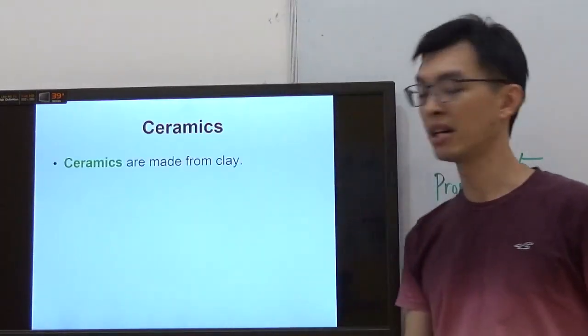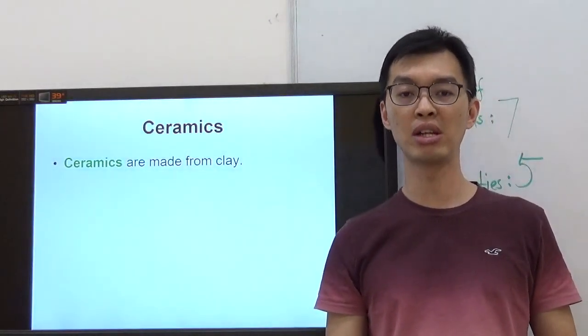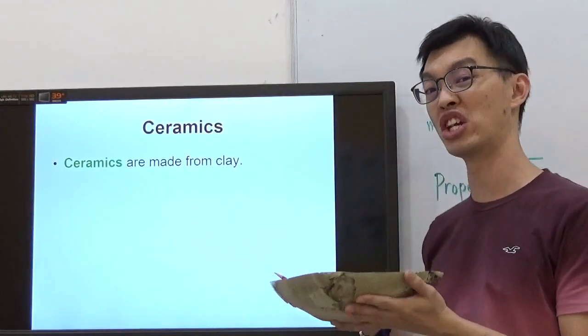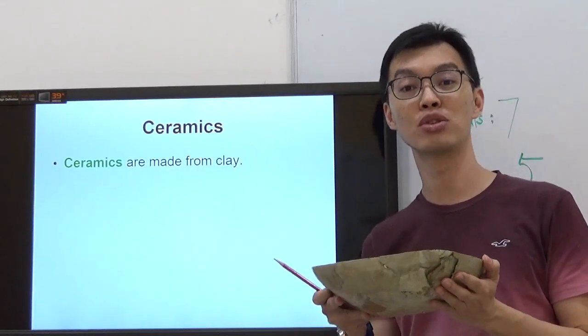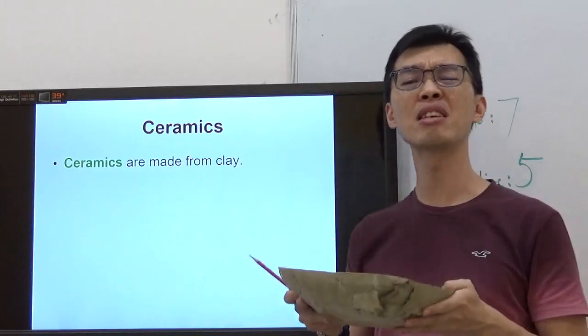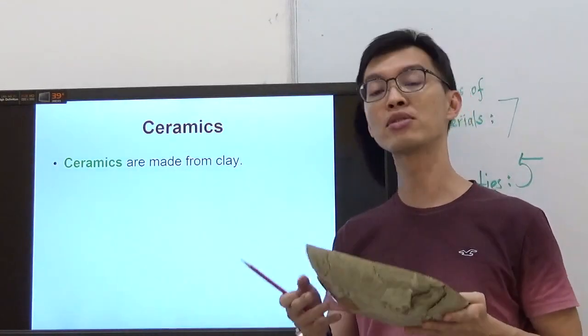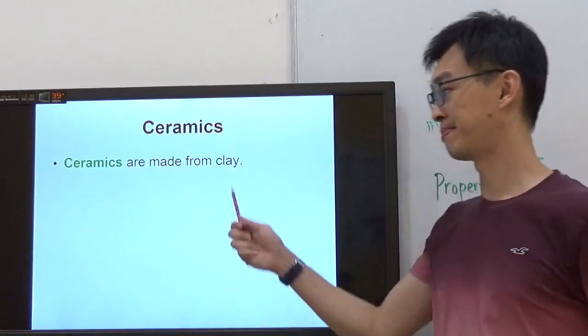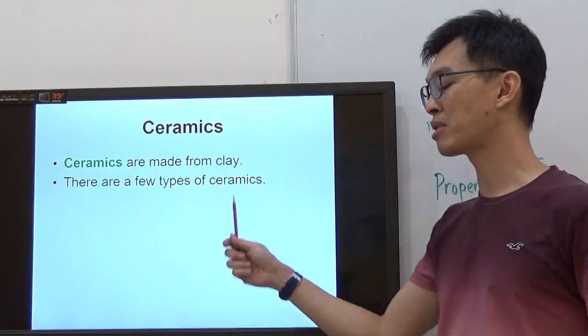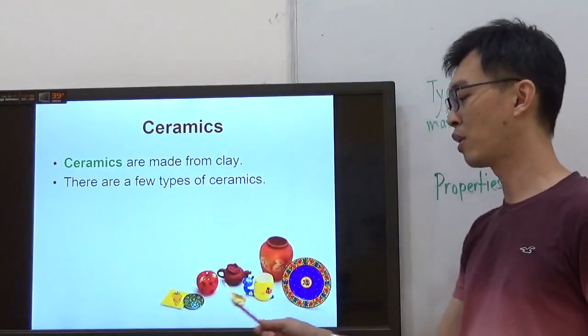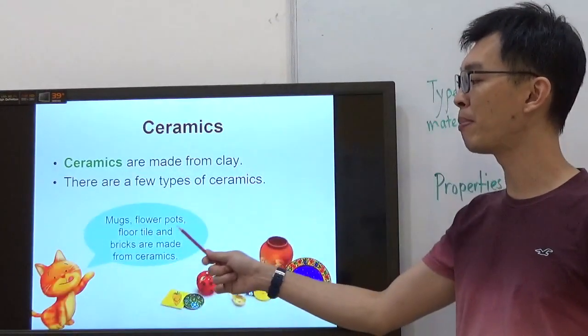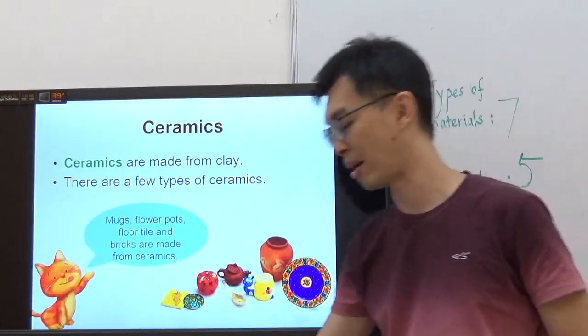Now, ceramic. Now, in case you are wondering what does ceramic really look like, I have a ceramic bowl that I made when I was doing my teaching, back then as a NIE teacher. Now, this is ceramic. Listen to the sound. It sounds like glass, but it's not glass. So, it is made from clay. There are a few types of ceramics. These are all ceramics. Mugs, flower pots, floor tiles, and bricks are made from ceramics.